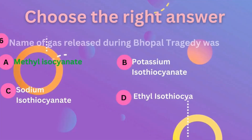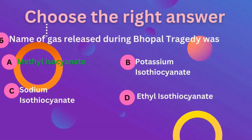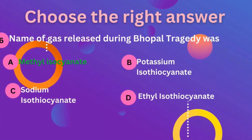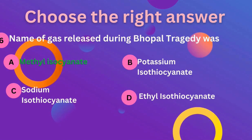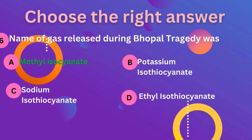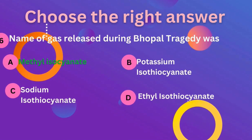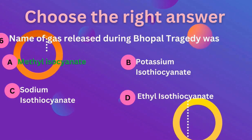Sixth question: the name of the gas released during the Bhopal tragedy was? The correct answer is A — methyl isocyanate.